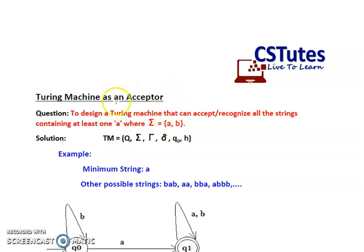Whenever we talk about an acceptor, the first thing that comes to mind is a DFA, because in DFA we talk about the acceptance of a string. Whenever we reach our final state, we say the string is accepted, and if we are not able to reach our final state, the string is rejected. So before learning a Turing machine as an acceptor, you must be clear about the concepts of DFA and how to create one.